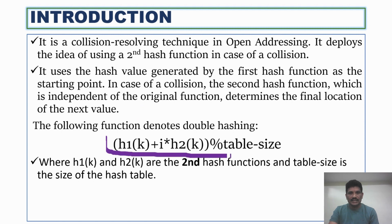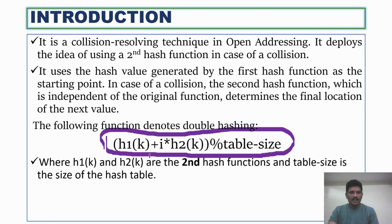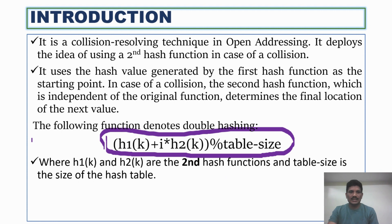This is the formula for the second hash function for resolving collisions: h1(k) + i * h2(k), modulus the table size. For the first collision, i becomes 1; second collision, i becomes 2; third collision, i becomes 3, and so on. Here, h1(k) and h2(k) are the hash functions, and table size is the hash table size.